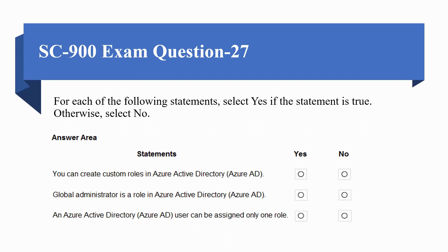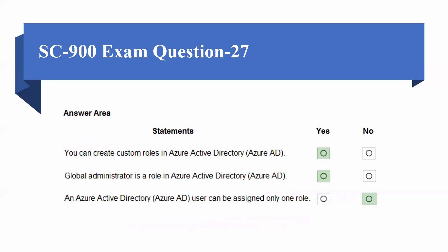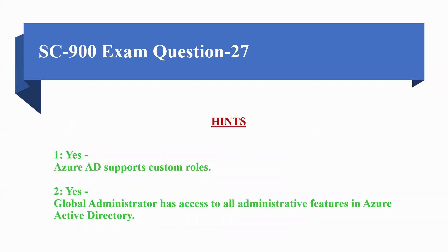Next question: For each of the following statements, select Yes if the statement is true, otherwise select No. Statements are: A) You can create custom roles in Azure AD, B) Global Administrator is a role in Azure AD, C) An Azure AD user can be assigned only one role. The answer to the first statement is Yes, because Azure AD supports custom roles. The second statement is also Yes, because Global Administrator has access to all administrative features in Azure AD.